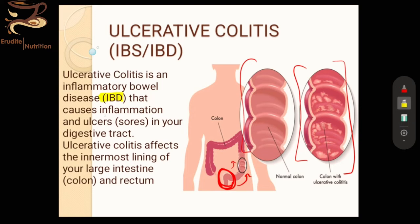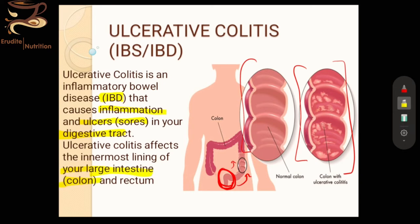Ulcerative colitis is an inflammatory bowel disease that causes inflammation and ulcer sores in the digestive tract. It affects the innermost lining of your large intestine, known as the colon, as well as the rectum. Ulcers, sores, inflammation, and swelling can be observed in the region of the colon above the rectum.